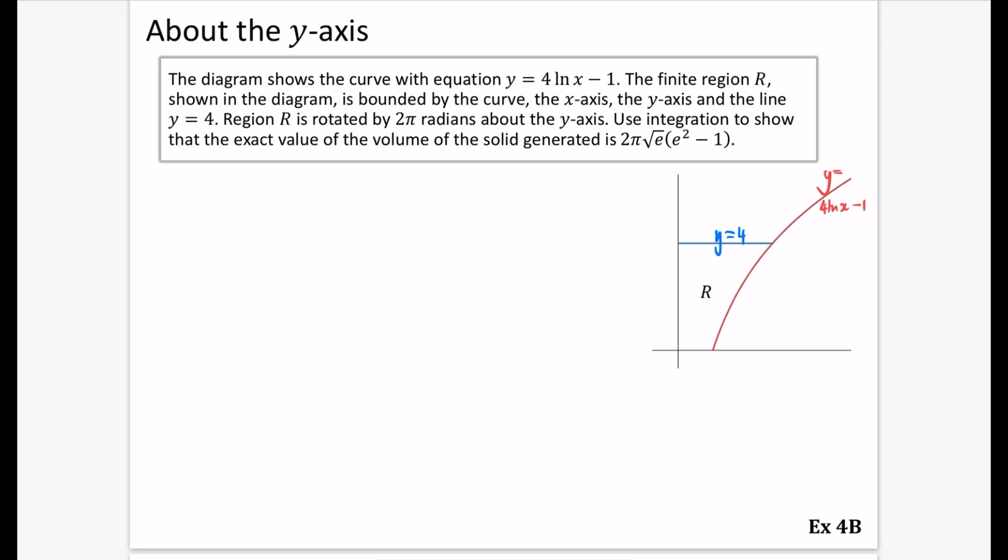Region R is rotated 2 pi radians about the y-axis. Use integration to show that the exact value of the volume of the solid generated is that crazy looking thing, 2 pi root e multiplied by e squared minus 1.